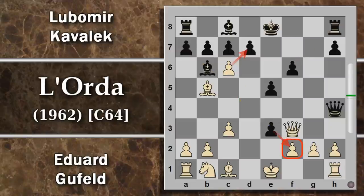Gufeld ha fatto un po' l'ingordo: gioca dxc6, e qui Cavalek gioca per la punta: fxf2 con scacco. Questo pedone è intoccabile.